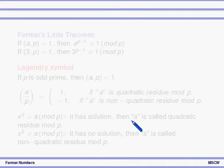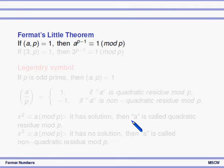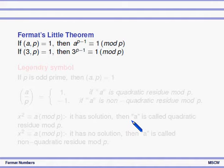Now let us recall the definition of Fermat's little theorem. We know that if a and p are relatively prime, then a^(p−1) ≡ 1 (mod p). For example, if p does not divide 3, that is a = 3 and p are relatively prime, then 3^(p−1) ≡ 1 (mod p). That is Fermat's little theorem.